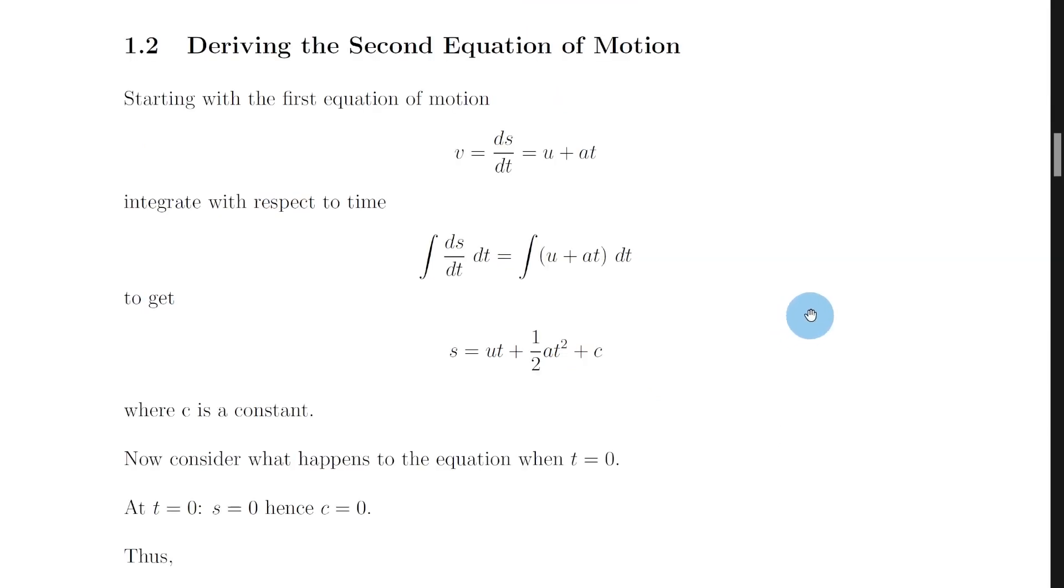So just a quick recap of that, you want to start with the first equation of motion v equals u plus at but you want to write it in terms of that equation from the relationship sheet v equals ds by dt instead. So you have ds by dt is equal to u plus at and then integrate both sides with respect to time.